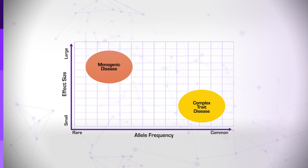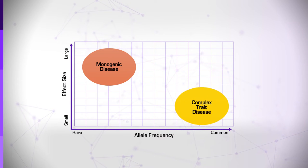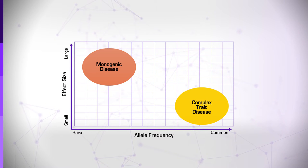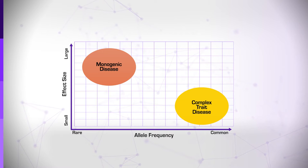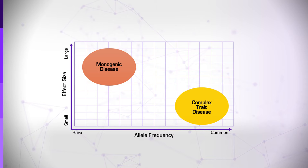A further difference is that most of the variants involved are common single nucleotide polymorphisms, SNPs, occurring with a population frequency of greater than 1%. These common single base variants are a small fraction of all the SNPs, nearly all of which are rare.